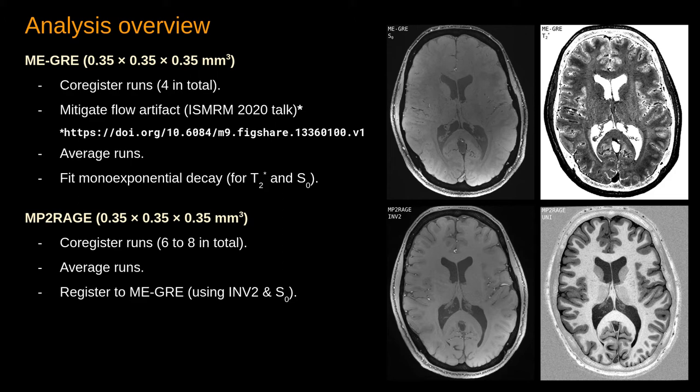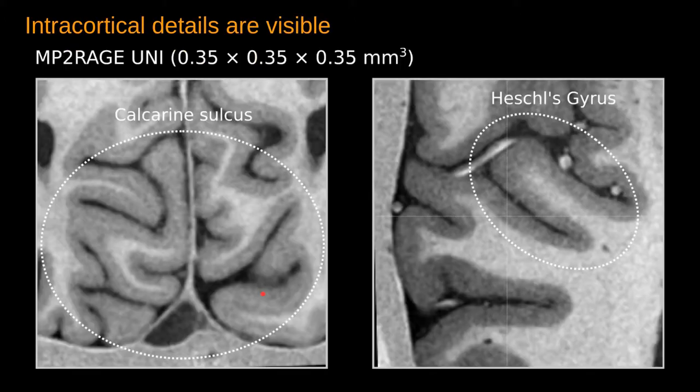Similar processing is done for MP2RAGE images. Now I would like to show you the quality of our data by zooming in to our anatomical regions of interest. On the left-hand side, you can see the calcarine sulcus and on the right-hand side, you can see a zoomed-in Heschl's gyrus.